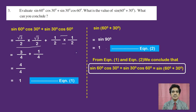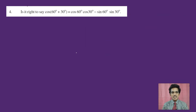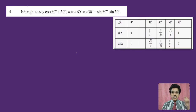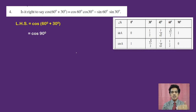Let us move to question number 4: Is it right to say that cos(60 + 30) equals cos 60 cos 30 minus sin 60 sin 30? This equation has a left-hand side and right-hand side. Let us find the left-hand side: cos(60 + 30) = cos 90 degrees = 0 from the table. So left-hand side is 0.